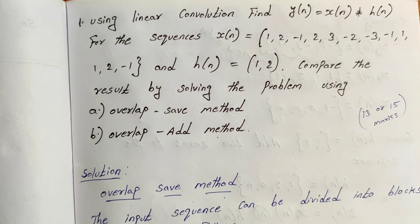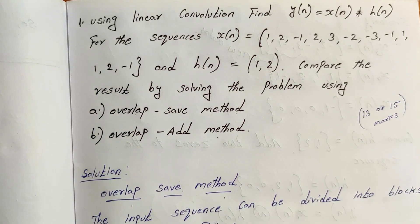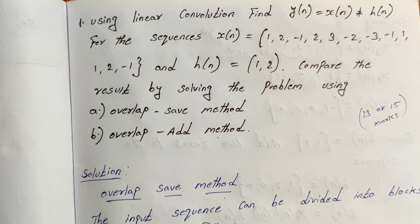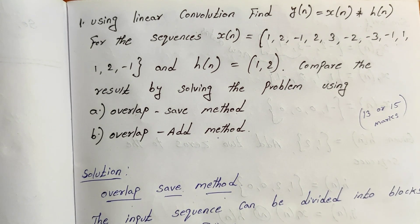Hello guys, we need to talk about DTSP. This is a repeated question — we ask about 13, 14, and 15 marks. We need to talk about the overlap save method and the overlap add method.